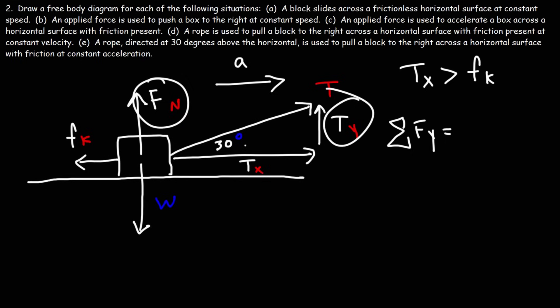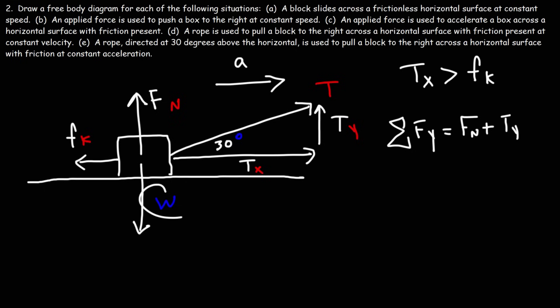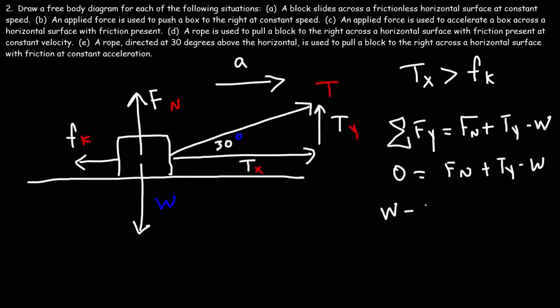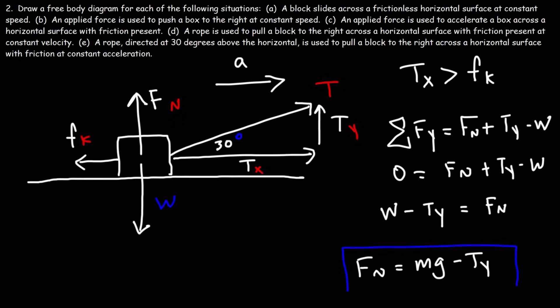The net force in y equals the two upward forces — positive Fn plus positive Ty — minus the downward force W. Because the block is not accelerating vertically, this net force is zero. Solving for the normal force, we get that Fn equals W minus Ty — that is, mg minus the y component of the tension force. So the normal force is not simply mg in this problem.